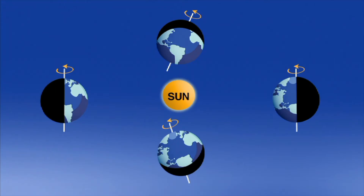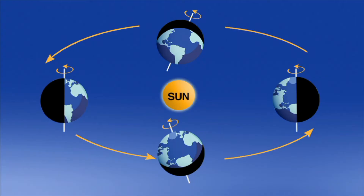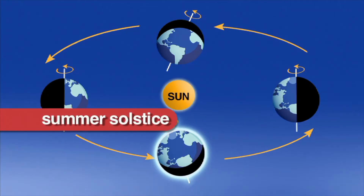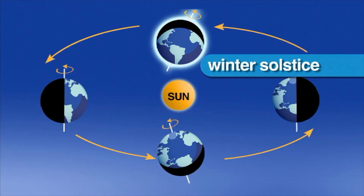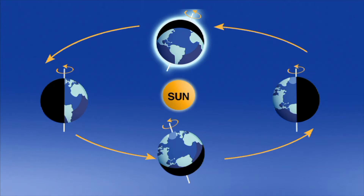As the Earth moves in its orbit, the tilt of the North Pole changes in relation to the Sun. The day that the Earth's North Pole is tilted closest to the Sun is called the summer solstice. The winter solstice, or the shortest day of the year, happens when the Earth's North Pole is tilted farthest away from the Sun.